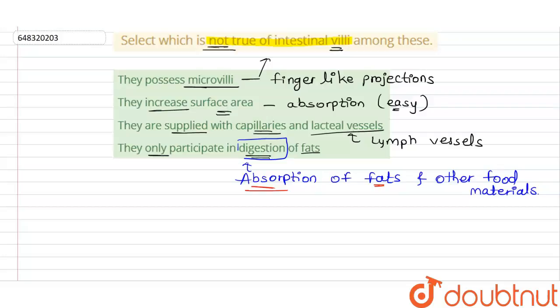So the wrong statement — which is not true, as we have been asked — is the last one: that they only participate in the digestion of fats. The right statement is that they help in absorption, not digestion, and not only of fats but of other food material as well.